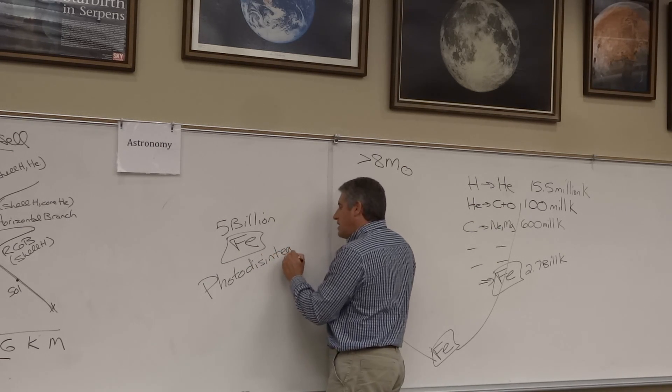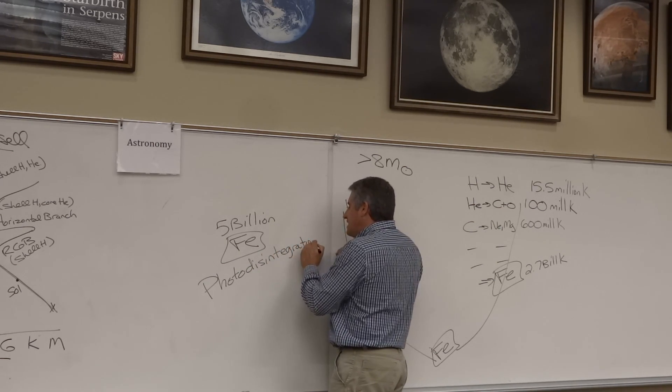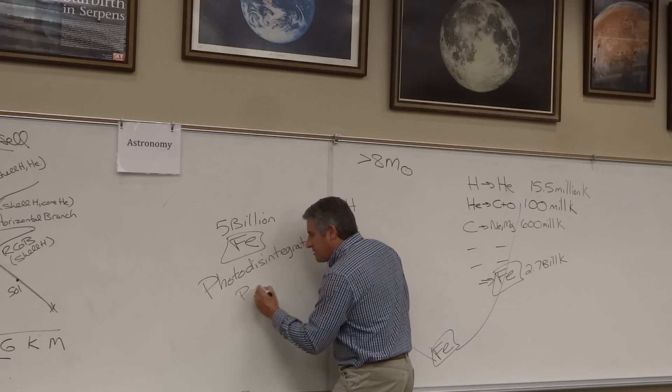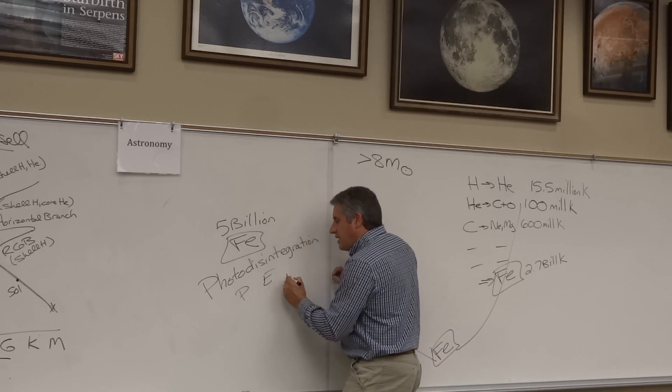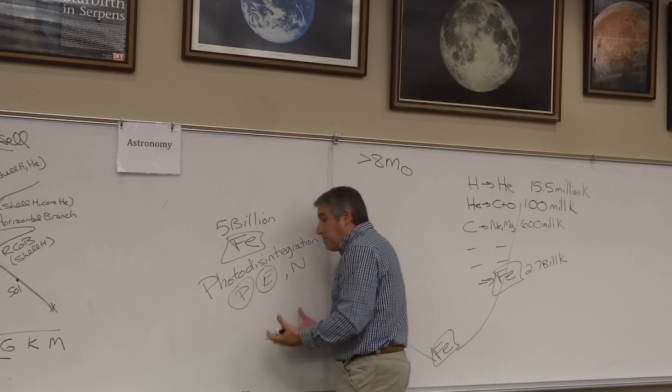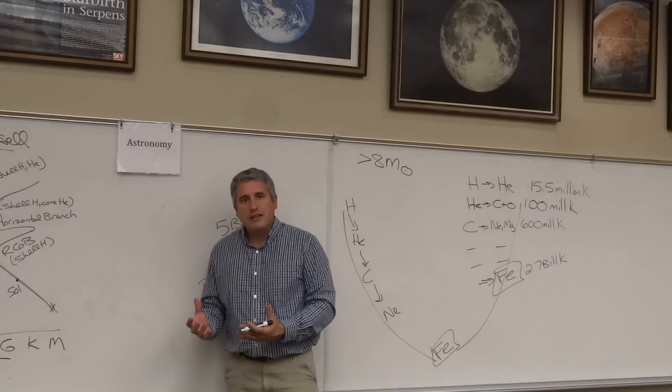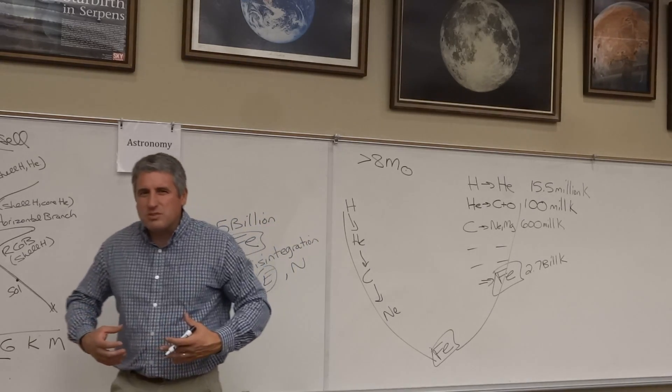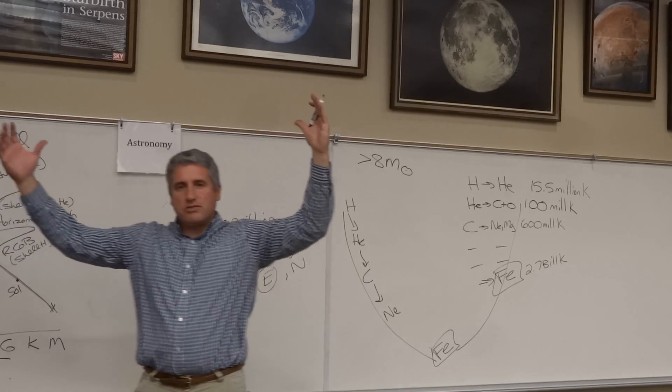Literally, photodisintegration, the iron is pounded apart and all we are left with is protons, electrons, and neutrons. Very quickly the protons and electrons combine to form neutrons. And they send out a burst of neutrinos. Right before a star explodes, there is a burst of neutrinos.